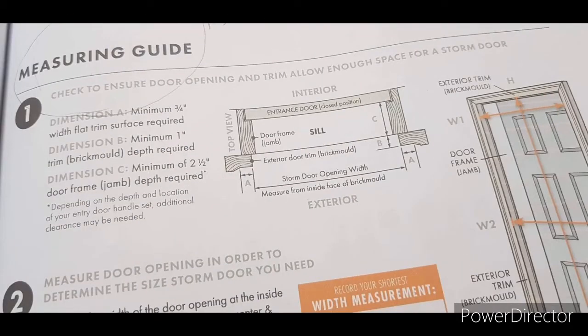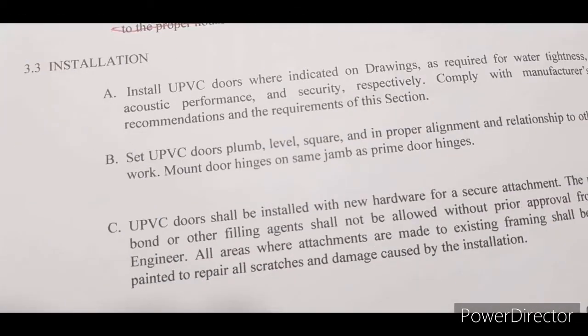Next is Measurement. In my case, since the material assigned to me is doors, this part is considered necessary. Here you indicate how the installer or contractor measured the space provided for the material to be installed.